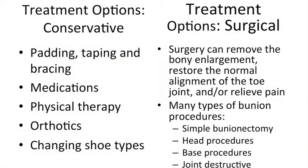Treatment options come in two varieties. First are conservative or palliative measures — non-surgical ways to make you feel better. Our goal is always to make you feel better and function better. We can use things like padding, taping, bracing, and splinting the toe. We can use non-steroidal anti-inflammatory drugs like ibuprofen or Tylenol to help with pain. Physical therapy and orthotics or arch supports can also improve foot function and range of motion.